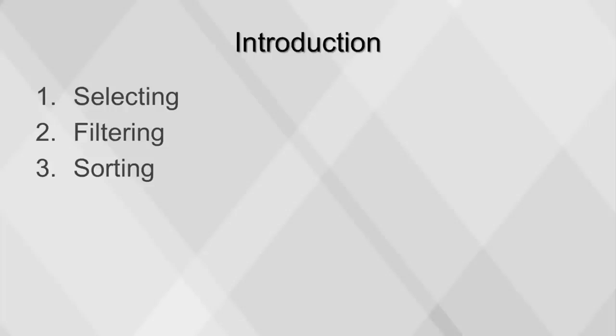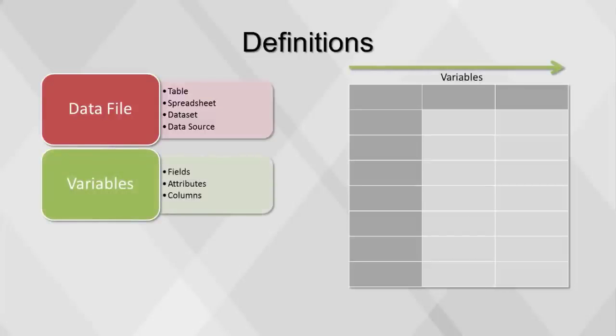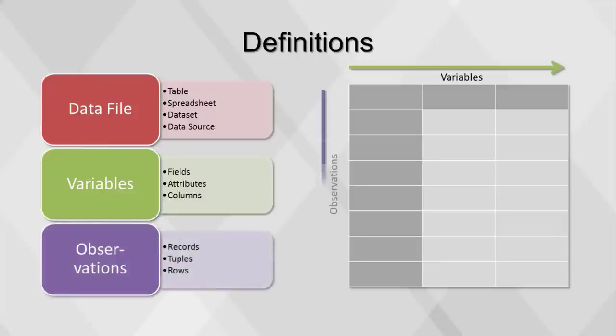This video will cover some of the foundations of business analytics: selecting, filtering, and sorting. There are many synonymous terms to describe the aspects of a typical data file, which can be referred to as a table, spreadsheet, data set, or data source. Along the horizontal axis are the variables, which can also be called fields, attributes, or columns. Along the vertical axis are the observations, also referred to as records, tuples, or rows.